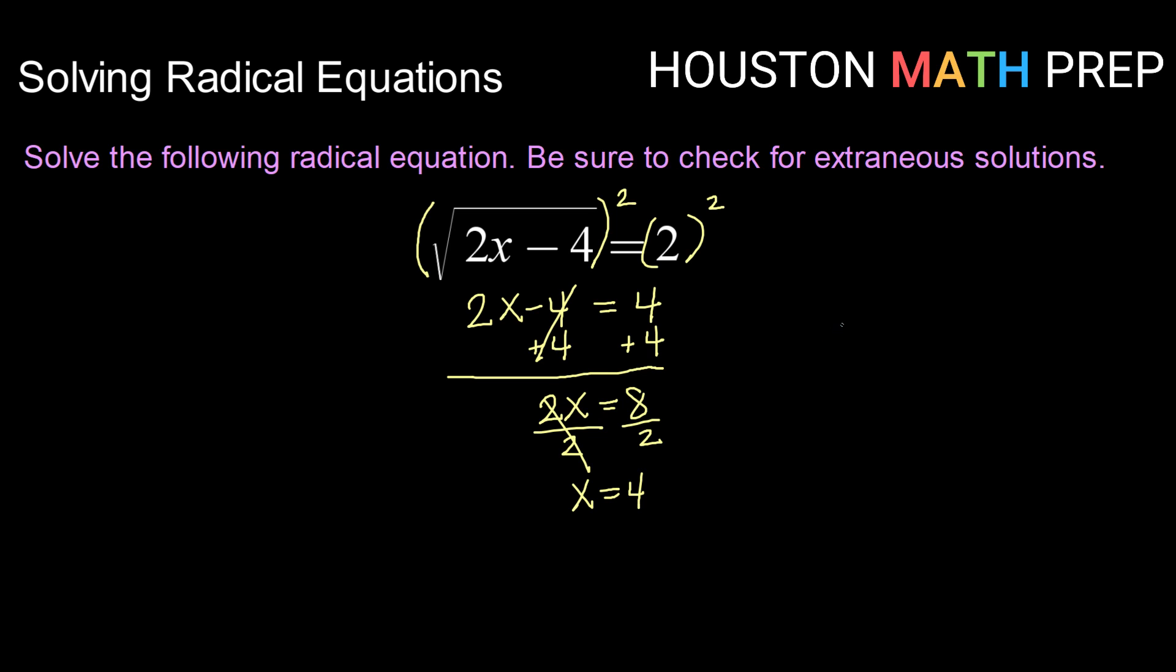Because we squared both sides it's important that we check our answers so let's do that. We want to know is the square root of 2 times 4 minus 4 equal to 2. So 2 times 4 gives me 8, 8 minus 4 is 4, and finally the square root of 4 is in fact 2. So we do get a true statement of 2 equals 2 which makes x equals 4 a good solution.